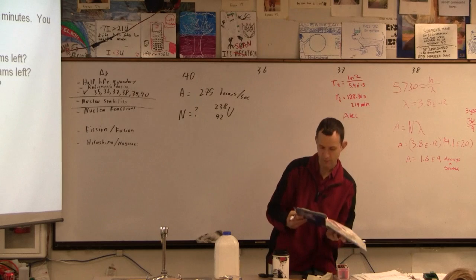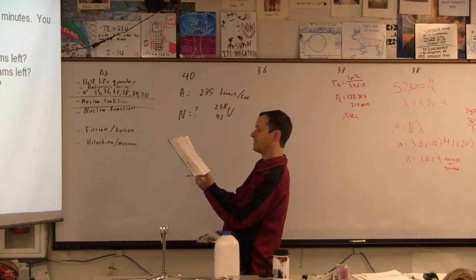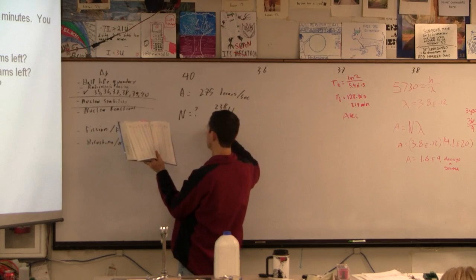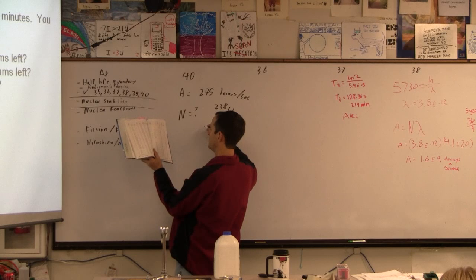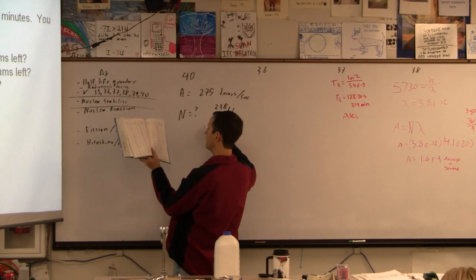And almost all of uranium is uranium-238. Some of it, 0.72% is uranium-235, naturally occurring, probably like Utah numbers. And those will vary, I believe by location, but I could be wrong.